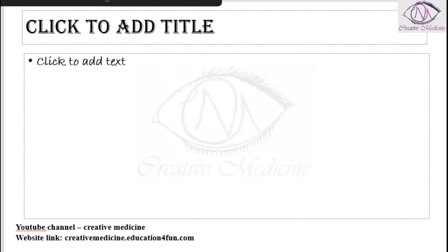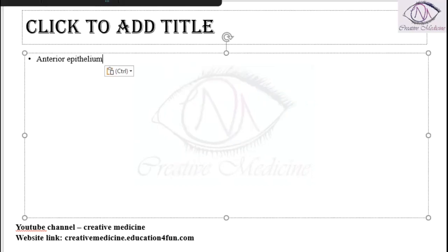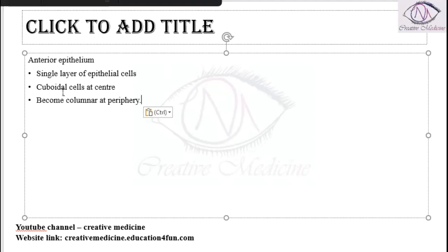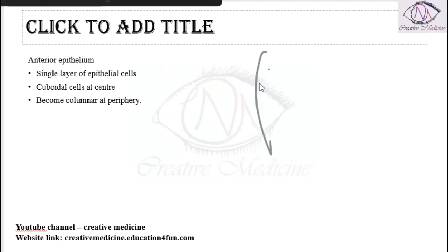Next we have the anterior epithelium. In the lens, a single layer of epithelial cells is present. These cells are cuboidal in nature at the center, while towards the periphery the epithelium becomes columnar.